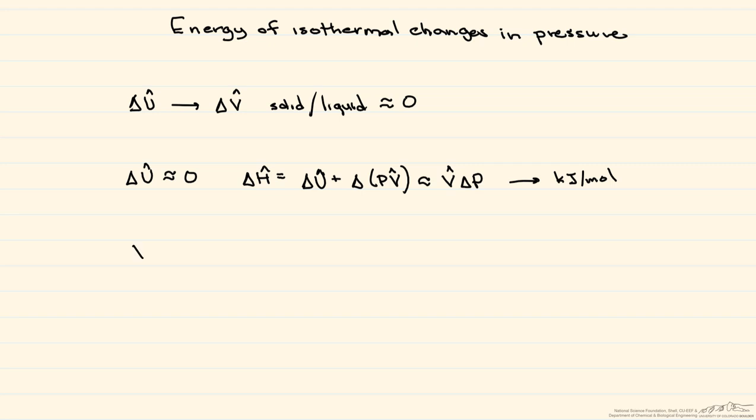So we want our V delta P to be in units of kilojoules per mole. If we write this out, our specific volume equals one over the density, so that's centimeters cubed per gram, times one divided by the specific gravity. Then we have our delta P, and that's going to be in atmospheres. Now let's start doing some conversions.